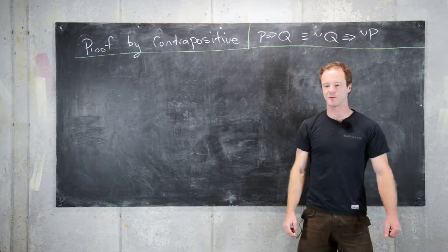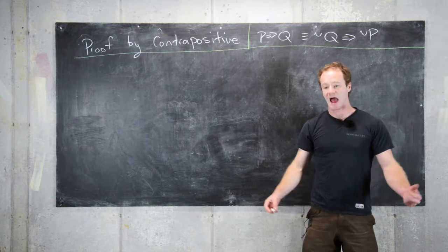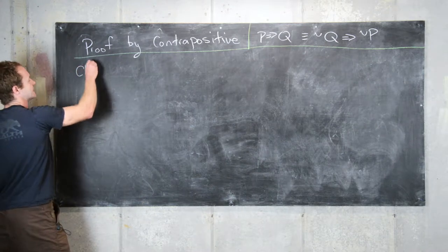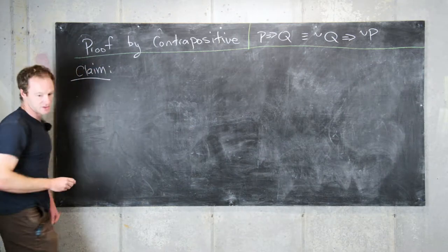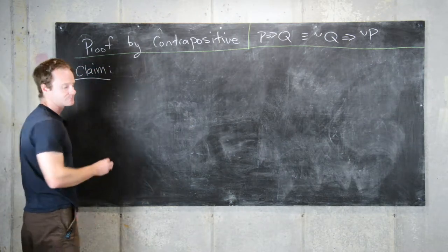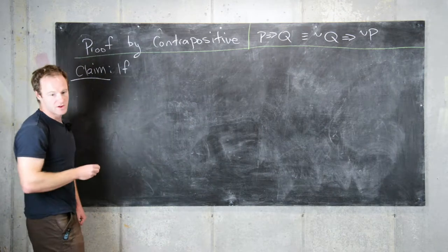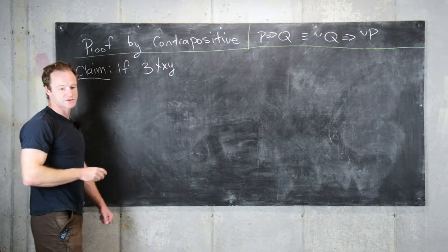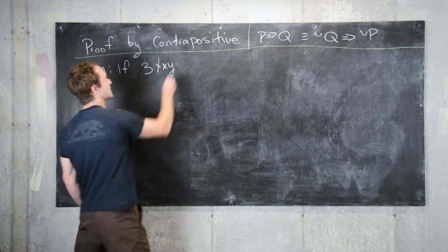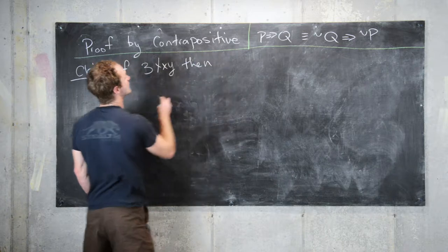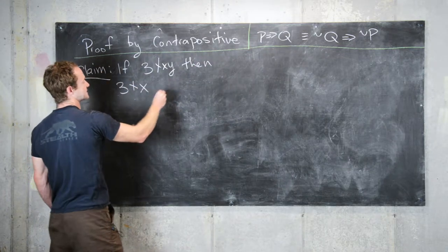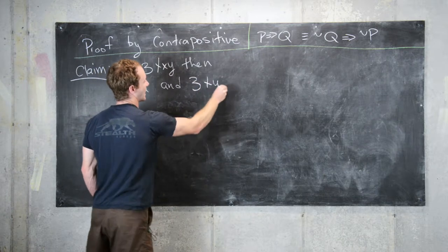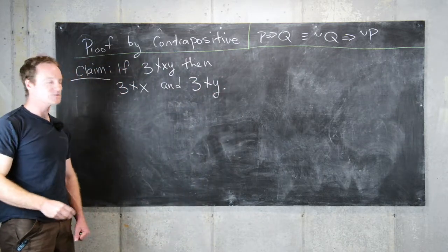The statement we want to prove in this case is as follows. We'll prove the following claim: if 3 does not divide XY—the product of X and Y—then 3 does not divide X and 3 does not divide Y.